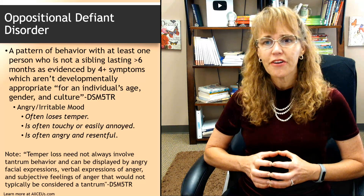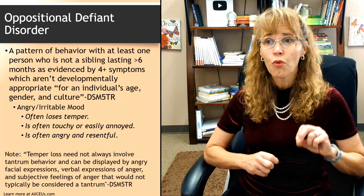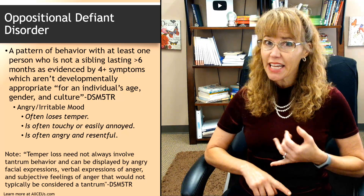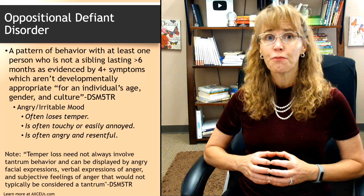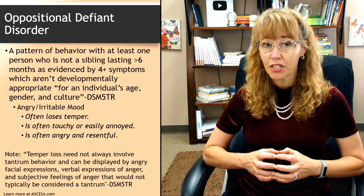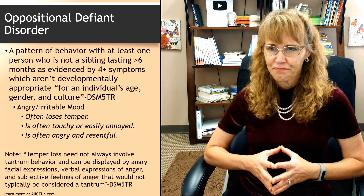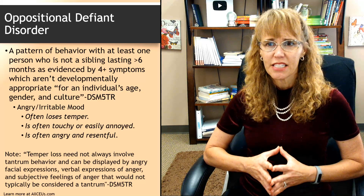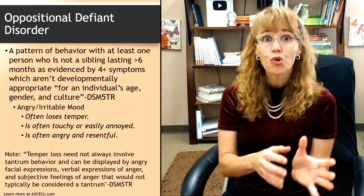Oppositional defiant disorder is characterized by a pattern of behavior with at least one person who is not a sibling, lasting more than six months, as evidenced by four or more symptoms that are not developmentally appropriate for the individual's age, gender, and culture. The symptoms must be present frequently for more than six months toward at least one person. Behavior is communication.